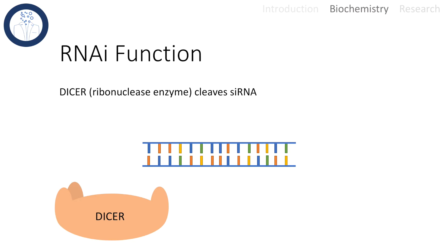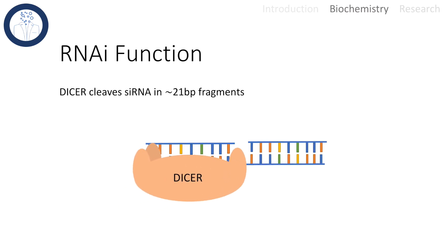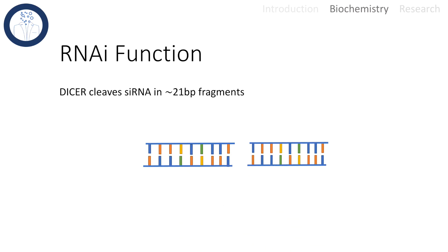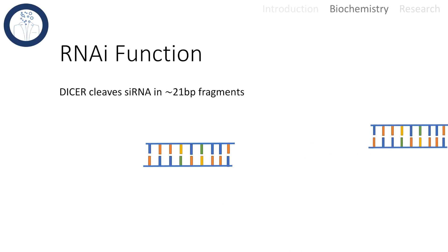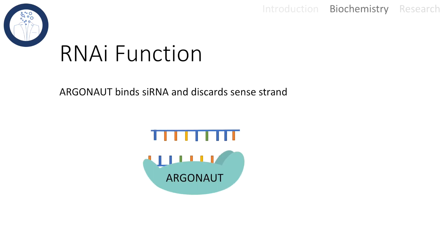The double-stranded siRNA is cleaved into smaller fragments by an enzyme called Dicer. Another protein from the Argonaute family then binds to the siRNA and discards the sense strand.